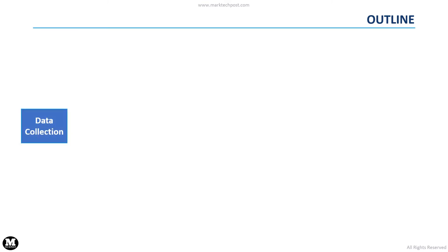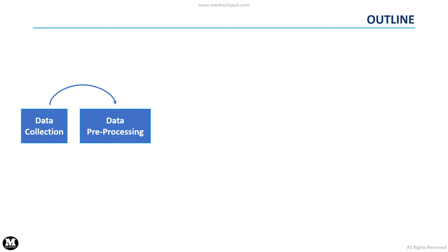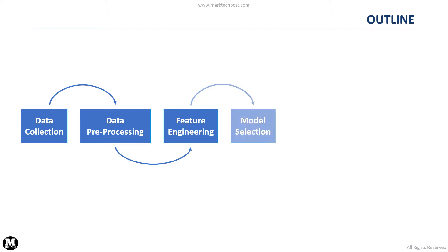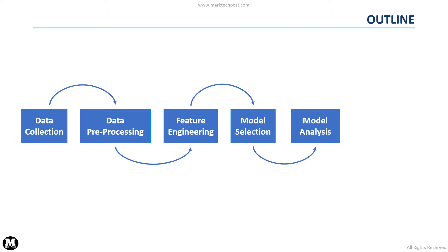First of all, we have to collect and explore the data we are going to use. Then we can manipulate the available data, for example to remove possible outliers. Hence, we extract and select features from the data, which will be used by the machine learning algorithm to learn a specific task. The next step is to select, tune and evaluate different machine learning methods to find the most suitable for our problem. Then we can analyze the predictions of our model to understand whether it is necessary to go back to any previous step of the pipeline and change something to improve performance. Finally, we can deploy the machine learning model and use it in a real-world scenario.